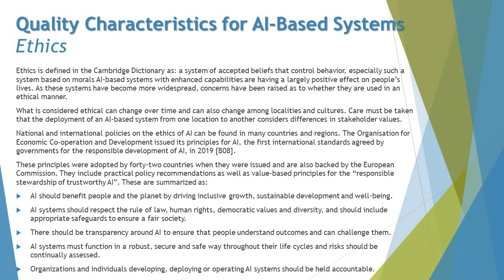These principles can be summarized in five points. First, AI should benefit people and the planet by driving inclusive growth, sustainable development, and well-being. Second, AI systems should respect the rule of law, human rights, democratic values, and diversity, and should include appropriate safeguards to ensure a fair society. Third, there should be transparency around AI to ensure that people understand outcomes and can challenge them. Fourth, AI systems must function in a robust, secure, and safe way throughout their life cycles, and risks should be continually assessed.